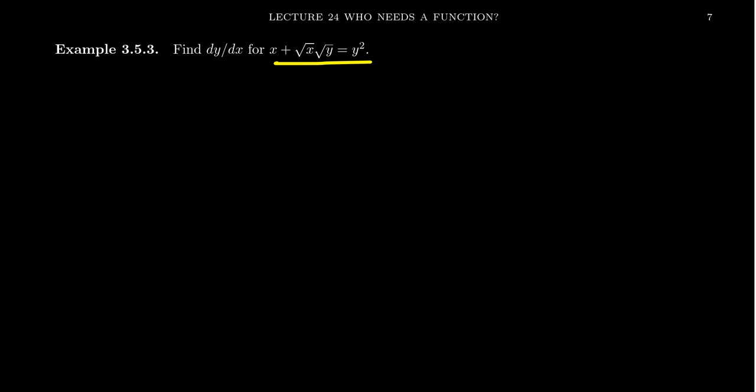You'll notice that in this relationship we don't have something of the form y equals f of x. That is, y is not explicitly solved for in this relationship, which is okay. We can compute the derivative using implicit differentiation, which is what we're going to demonstrate here in this video. Trying to solve for y, assuming that's even algebraically possible, because sometimes you do get problems with that — it's a chore that is not really necessary. We can actually derive dy over dx completely implicitly here.